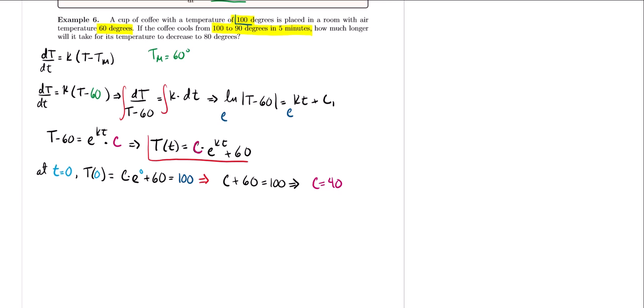We know our C value is 40, but we still need to find k. Our temperature function so far is T(t) = 40·e^(kt) + 60. We also know that at t = 5 minutes, the temperature was 90 degrees, so we'll use that condition to find k.